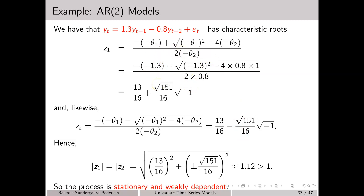What is quite interesting is that for the AR(1) model we did not allow the autoregressive coefficient to equal 1.3 — in that case the AR(1) model would be non-stationary. This means that having an AR(2) model gives us more flexibility: we allow greater autoregressive coefficients of order 1 and still achieve stationarity.